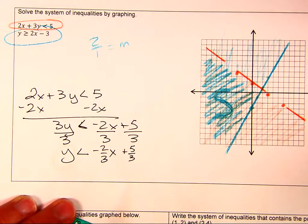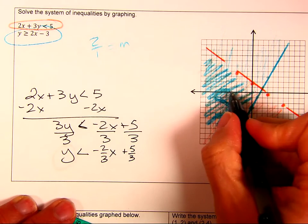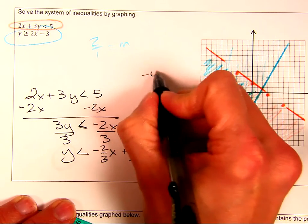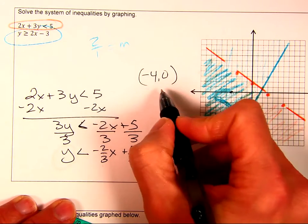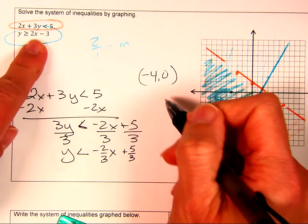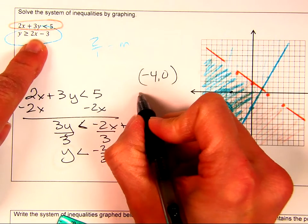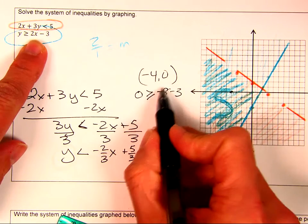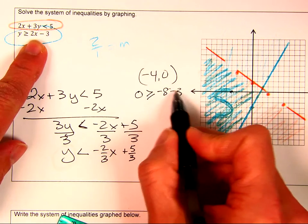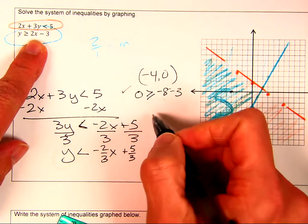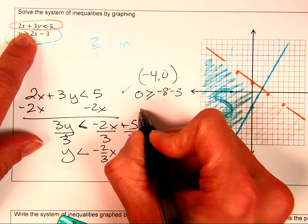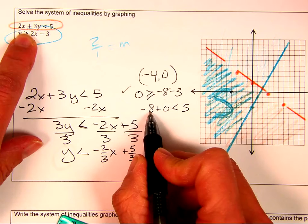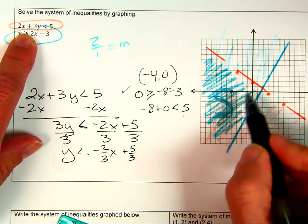The region where the orange and blue overlap is my solution set, which I darken in and mark with S. I can test a point — I'll use (-4, 0) since it's on an axis. For the first: 0 > -8 - 3 — a negative expression, so 0 is always bigger. That checks. For the second: -8 + 0 < 5 — a negative number is always less than 5. That checks too.